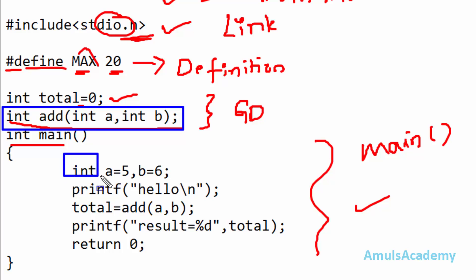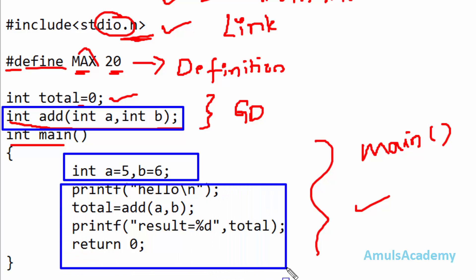Here, this is the declaration part where we are declaring two local variables, a and b. And next, this is the execution part.